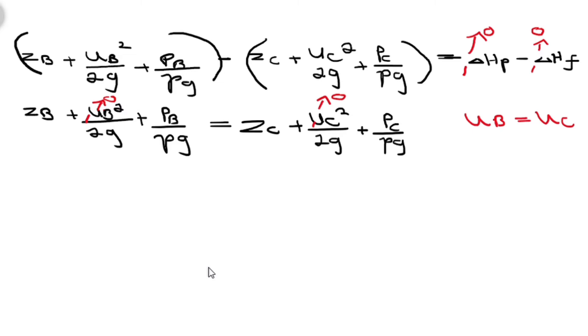We are therefore left with the height at point B, pressure at point B over density gravitational force, Zc which is the height at point C, Pc pressure at C over density gravitational force.